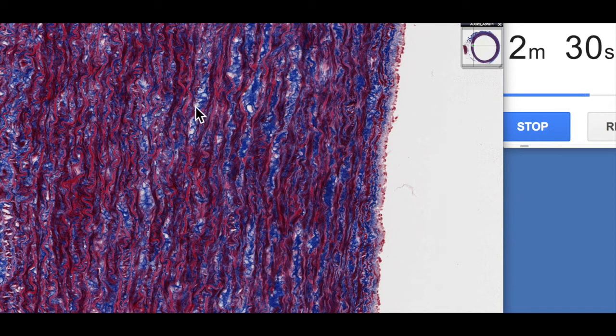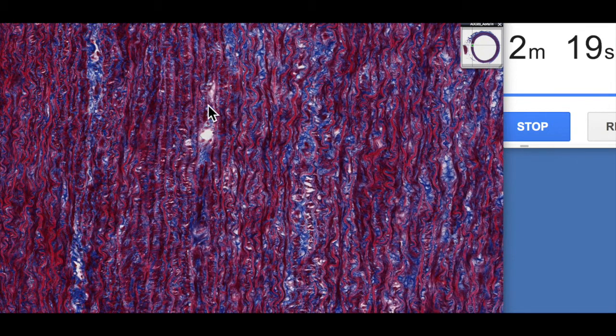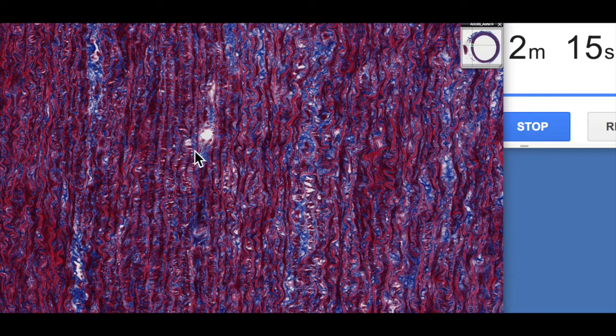And then in between we've got the collagen fibres and then not very well visualized with this stain but there would be of course smooth muscle cells in between these elastic lamellae. Again we've got some of these little blood vessels in the wall. These are the vasovizorum which we talked about previously.